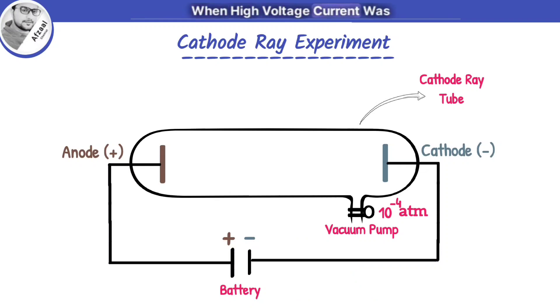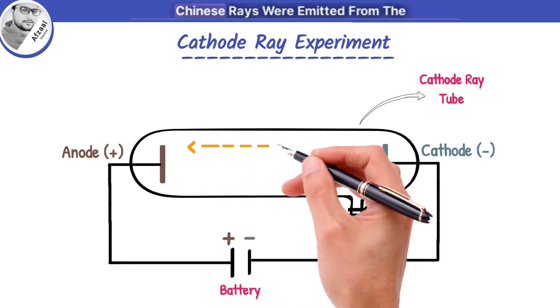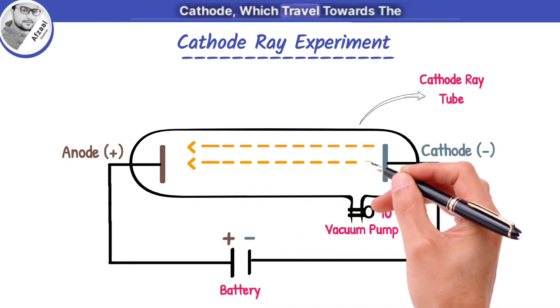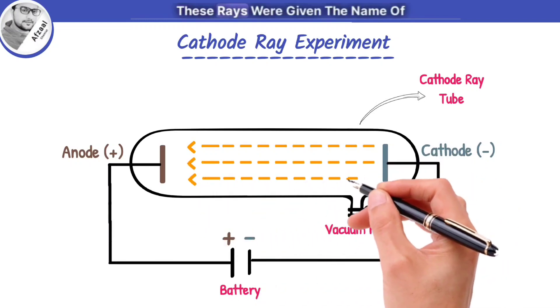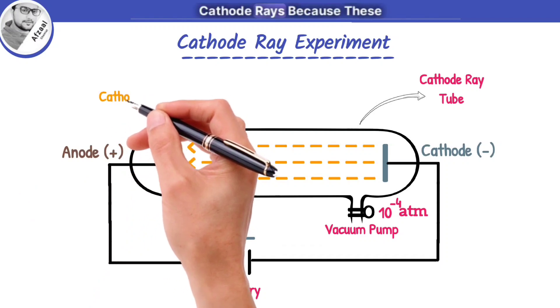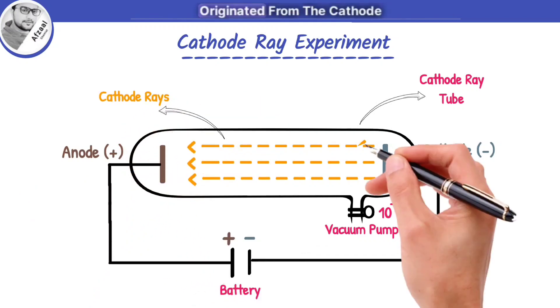When high-voltage current was passed through the gas, shiny rays were emitted from the cathode which traveled towards the anode. These rays were given the name of cathode rays because these originated from the cathode.